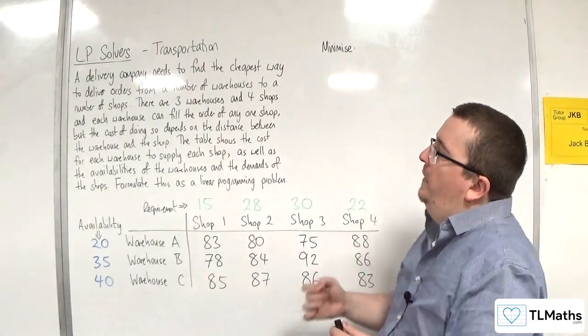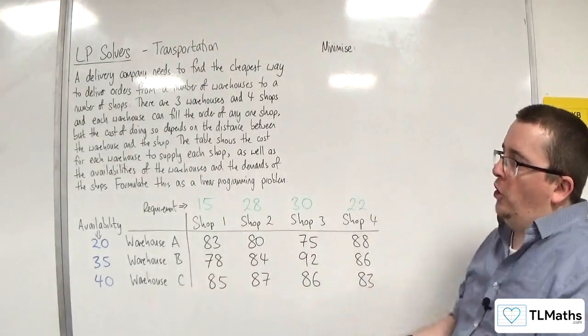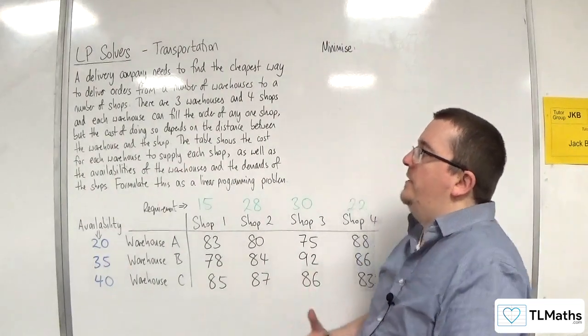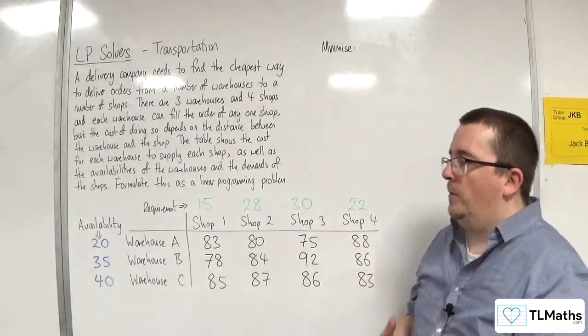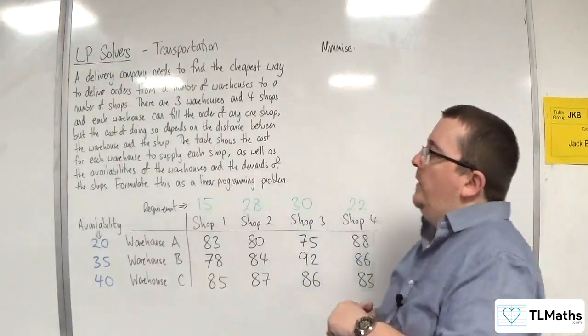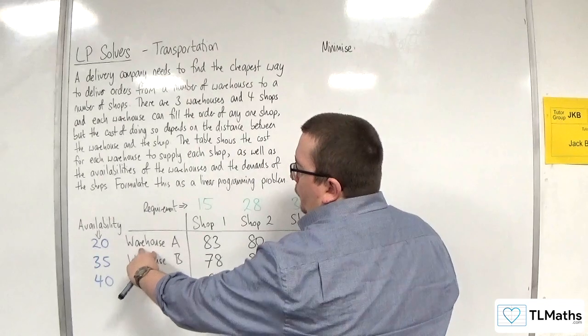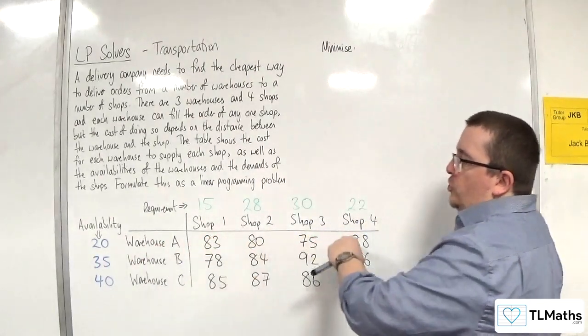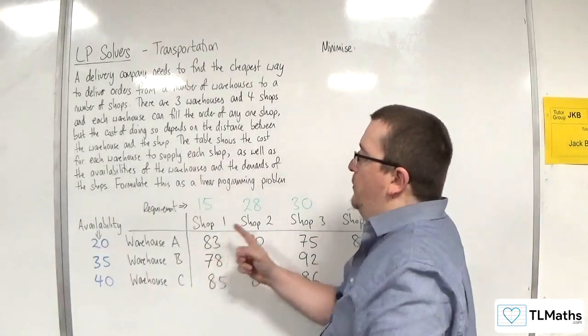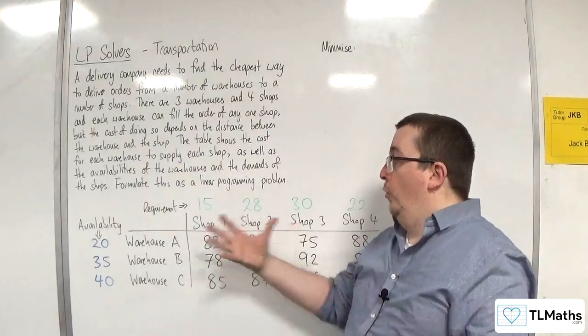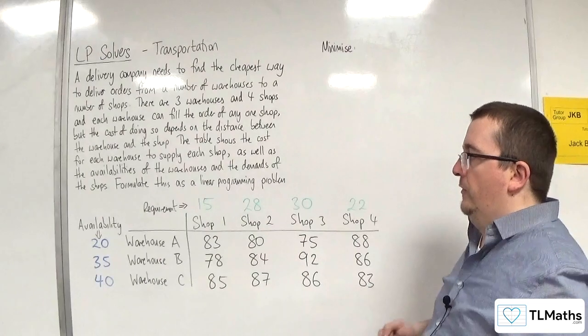Each warehouse can fill the order of any one shop, but the cost of doing so depends on the distance between the warehouse and the shop. So that means warehouse A can stock more than just shop one. It could do some to shop one, some to shop two, some to shop three, some to shop four, or all to just shop two, for example.